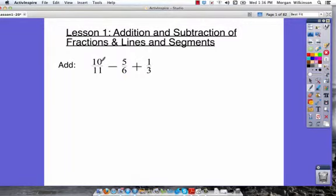Remember the number on top is called the numerator, the number on bottom is called the denominator. So when we look at 11, 6, and 3, the least common multiple of those must be 66. So we're going to rewrite these fractions. We're going to have something over 66 minus something over 66 plus something over 66.